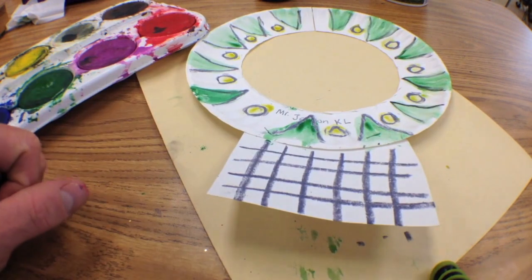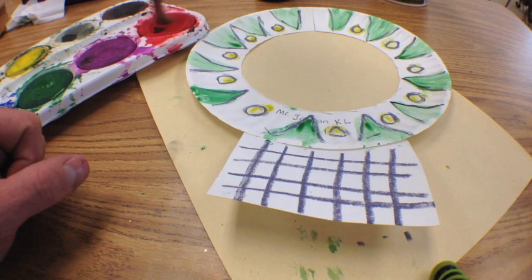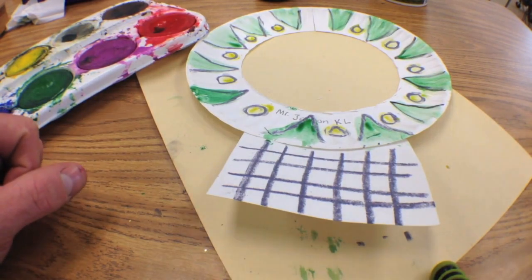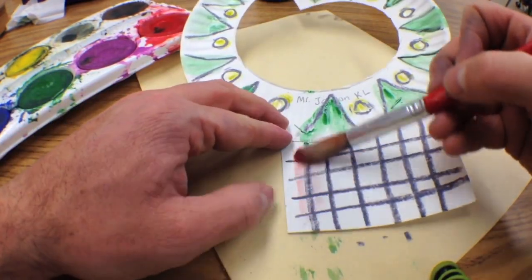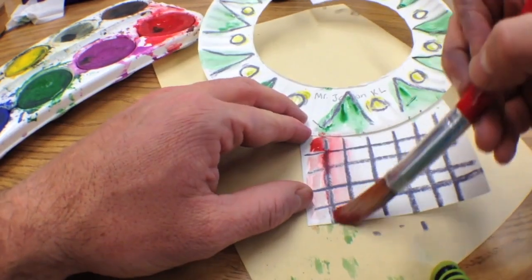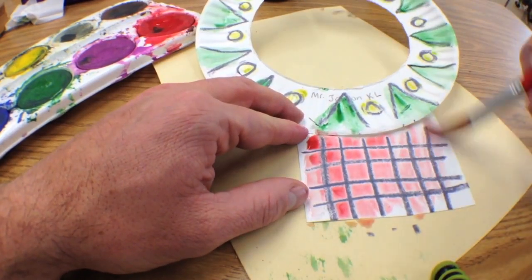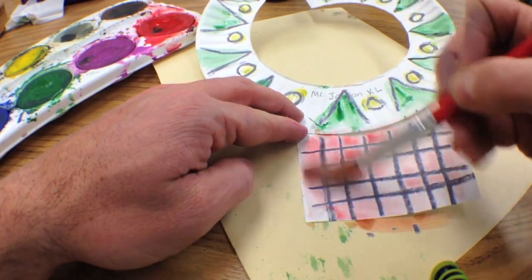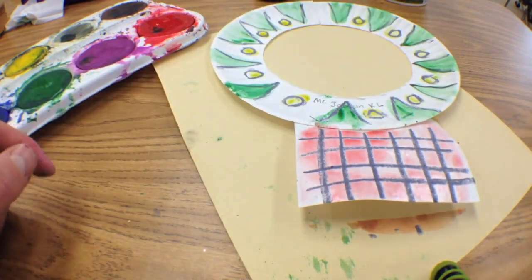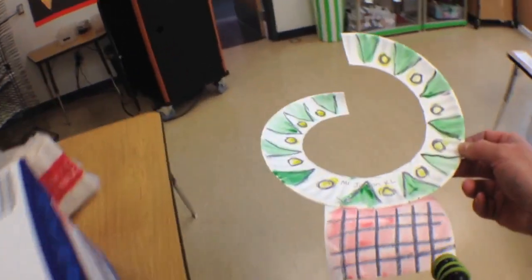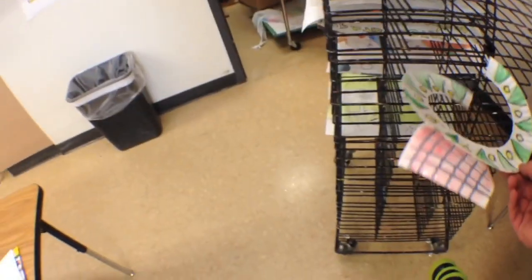Then I'm going to wash my brush again in my cup of water. Get red paint. And I'm going to paint that extra part red. When you're finished painting, get your work put on the drying rack.